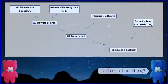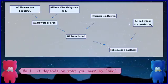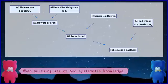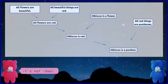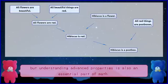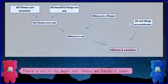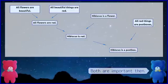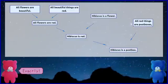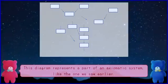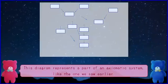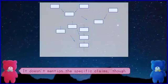Is that a bad thing? Well, it depends on what you mean by bad. When pursuing strict and systematic knowledge, that is the most important aspect of mathematics — it's not ideal. But understanding advanced properties is also an essential part of math. There's still so much out there we haven't seen. Both are important then. Exactly. So, moving on to the main topic. This diagram represents a part of an axiomatic system, like the one we saw earlier. It doesn't mention the specific claims, though.